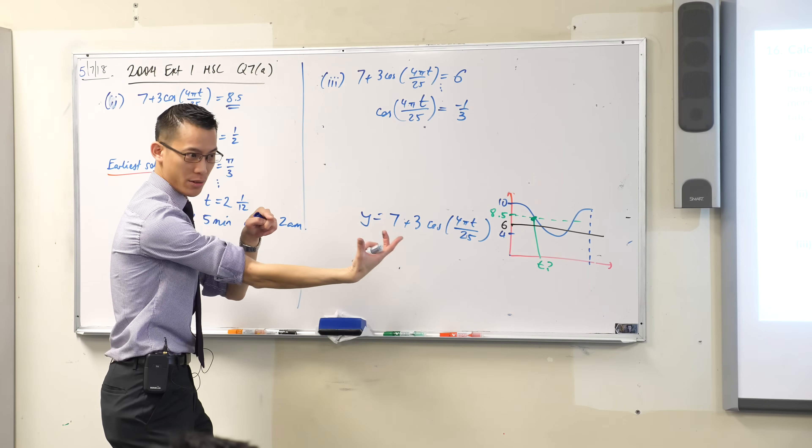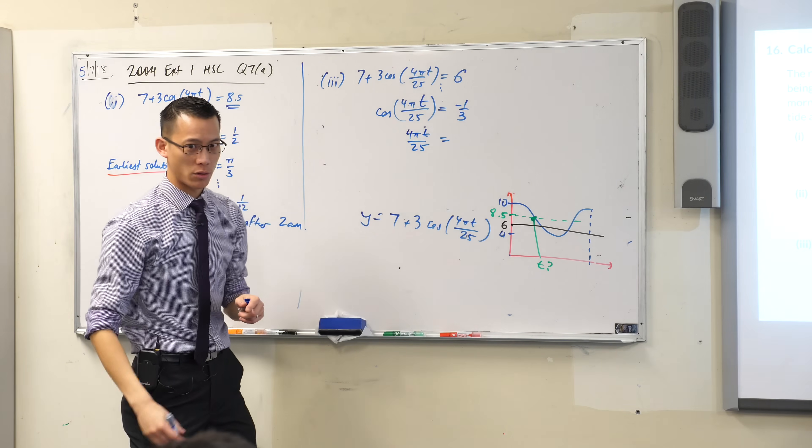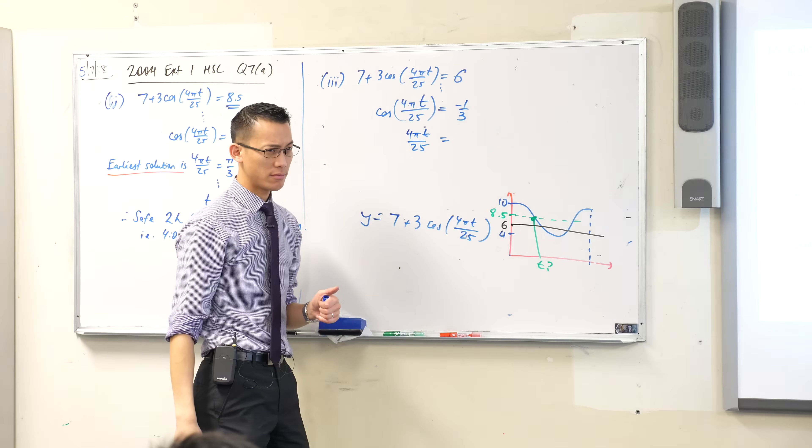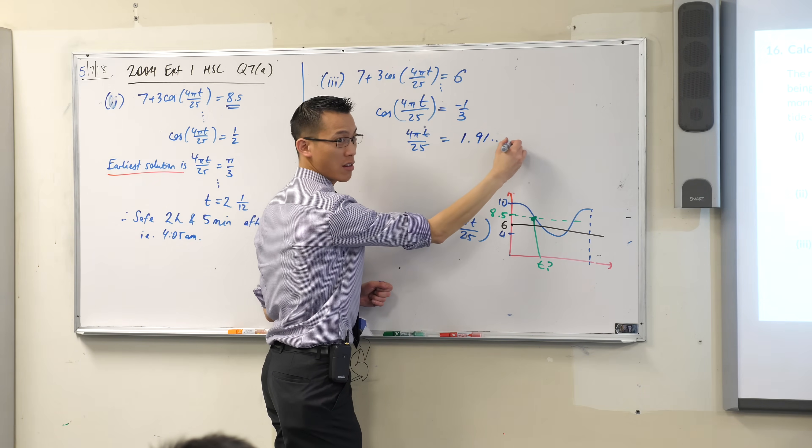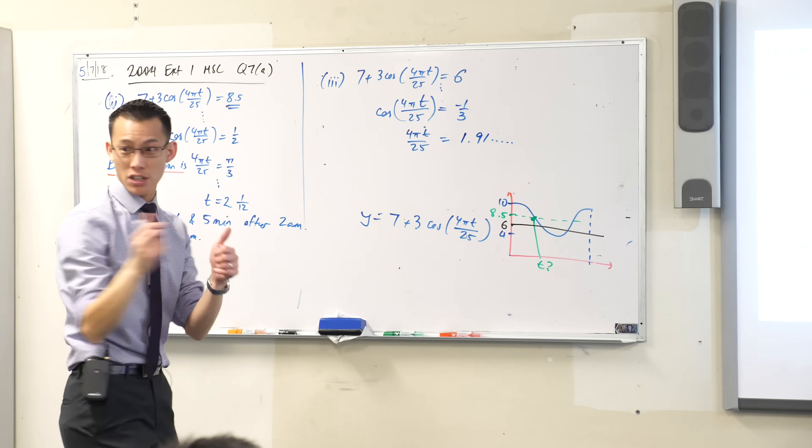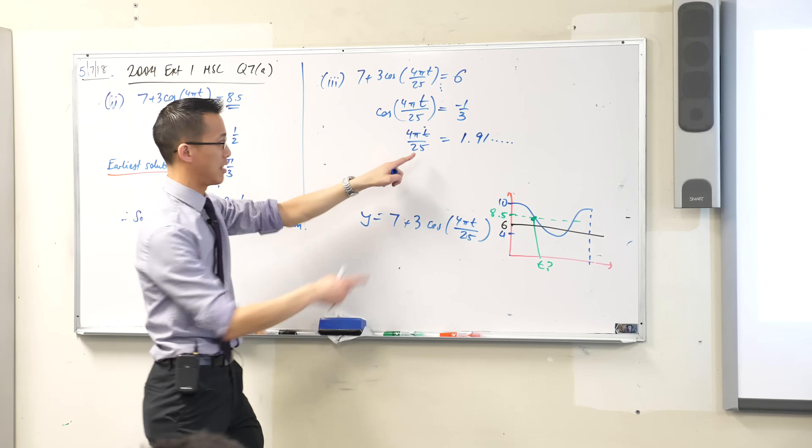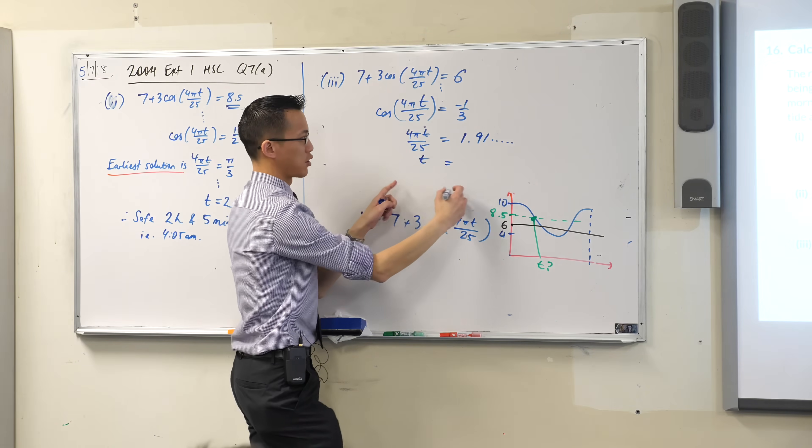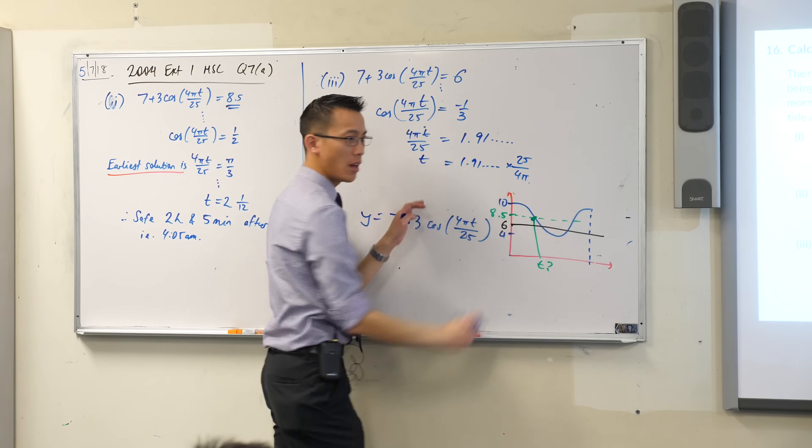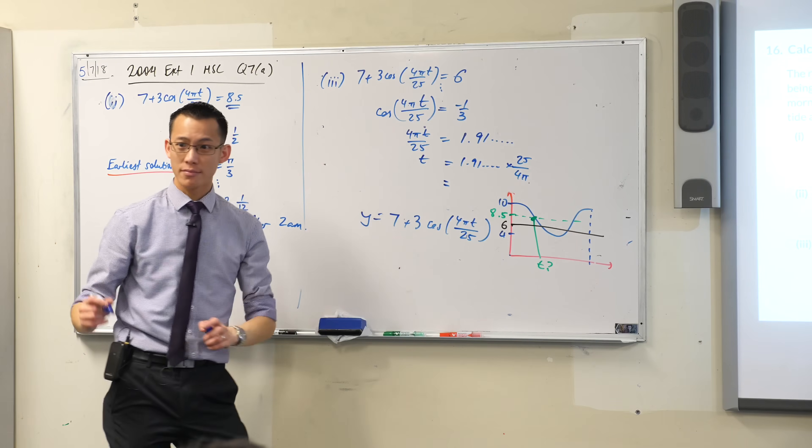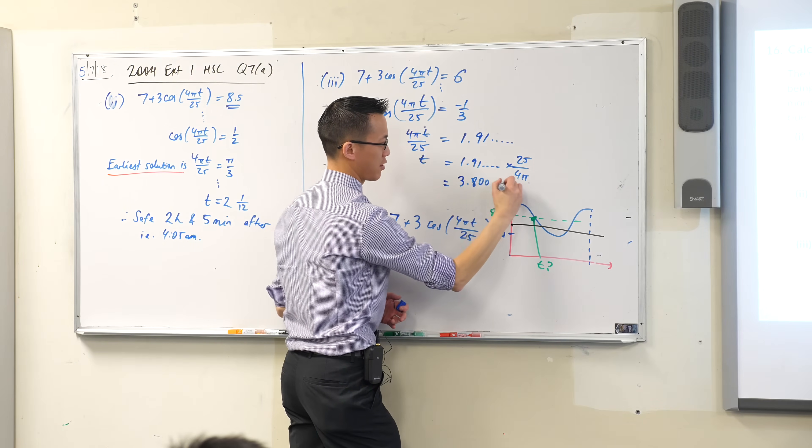When you go and make sure your calculator is in that mode and you press shift cos, you're going to get something for this. Has anyone got it? Anyone got the angle that you get? I think you should be getting 1.91 something or other from memory. Can someone confirm that for me? Yeah, you happy? So you got there. This is cos inverse of negative a third. But of course, that's not t. It's this stuff with t. So I'm going to have to multiply through by the appropriate number like this. This gives us a value. Can someone find that value for us? Yeah, 3.800...